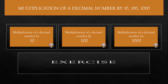One thing I want to mention before we start is that in order to multiply a decimal number by Ten, Hundred or Thousand, we just shift the decimal point in the product to the right by as many places as there are zeros in the multiplier. Let's begin.